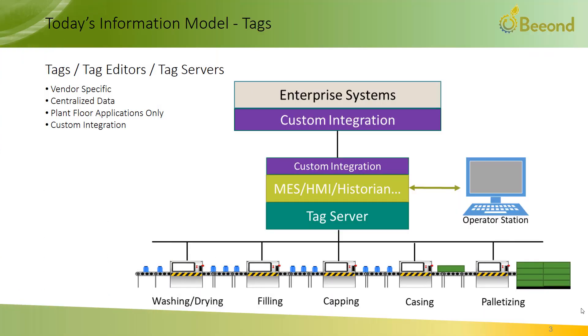One of the most important and least understood features of OPC UA is information modeling. Currently, most automation systems use tags, tag editors, and tag servers to define and manage the data in their systems.